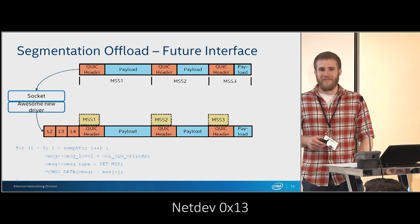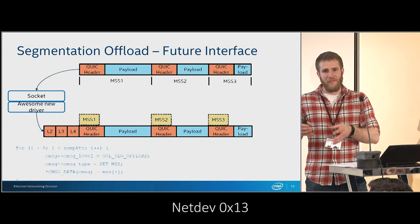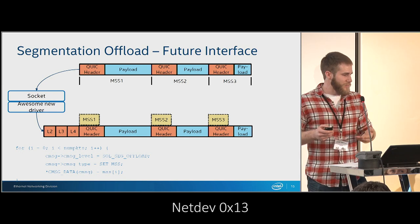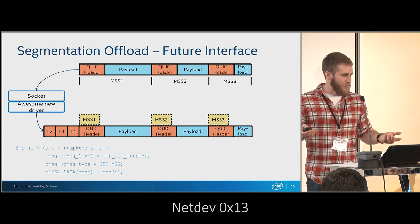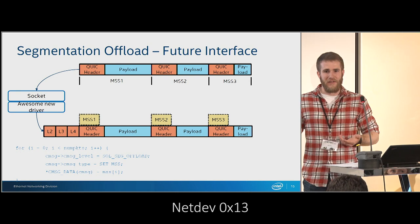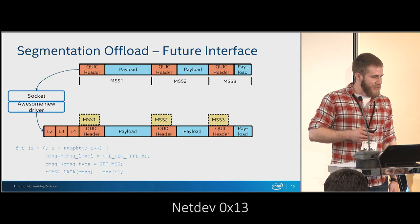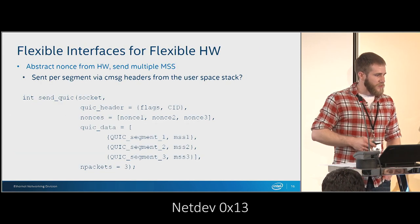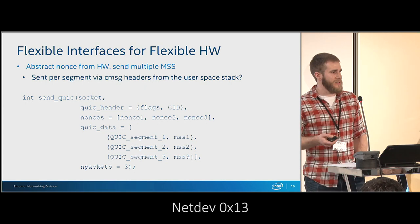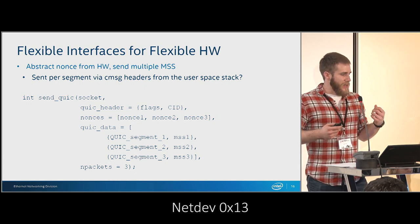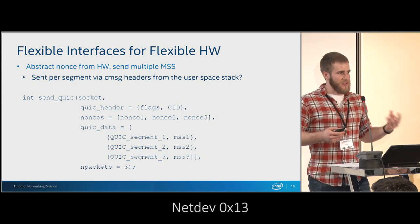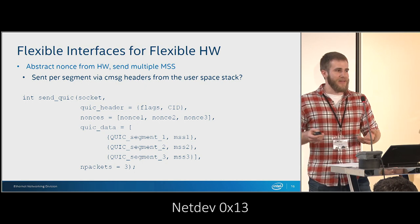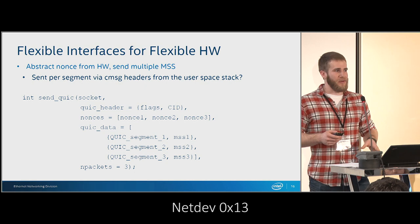We want to avoid the padding. The way we propose to do that is to take multiple MSS values per QUIC segment and send them through the socket to the driver, inserting that as metadata to the hardware. This has some limitations because you can only send so much metadata to hardware, but this works much better because you don't have to send any unnecessary padding. You create an array of MSS cmsg headers. As an extension, you could also abstract the nonce away from the hardware - just like sending multiple MSS values, you could send the nonce per segment as a cmsg header. We didn't implement this version because our hardware can't support it right now.